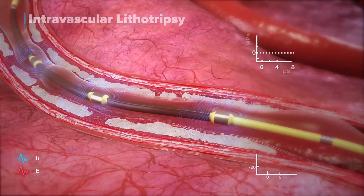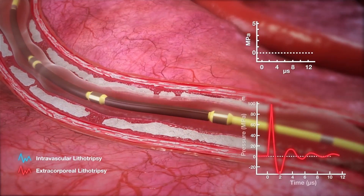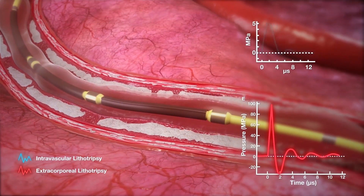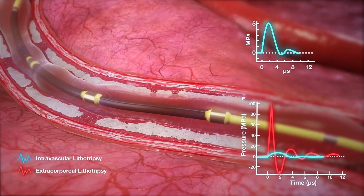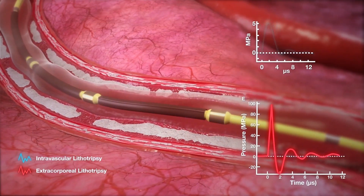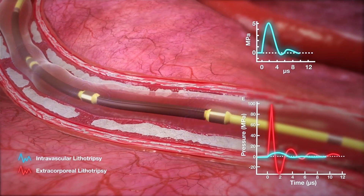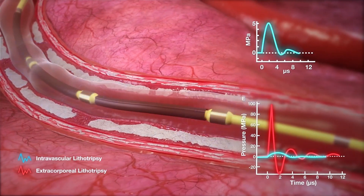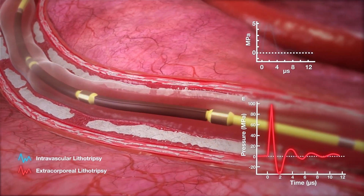To help minimize injury to soft tissue, IVL's waveform is designed to be different than traditional lithotripsy, which has a higher peak pressure and a larger negative pressure trough.